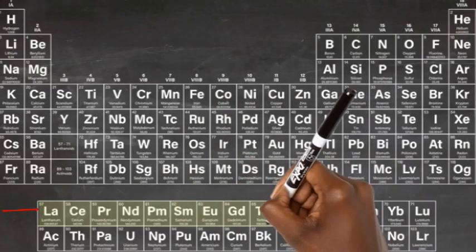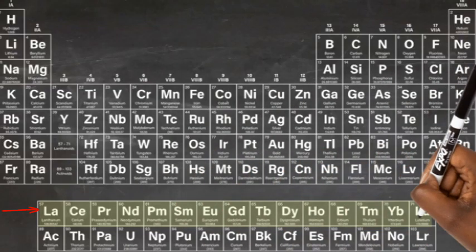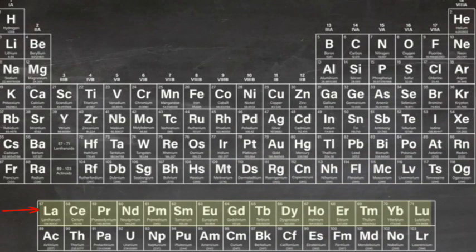Lanthanides. The lanthanides comprise elements 57 through to 71 and take their name from lanthanum, the first in the list. Along with actinides, they're also called F elements.